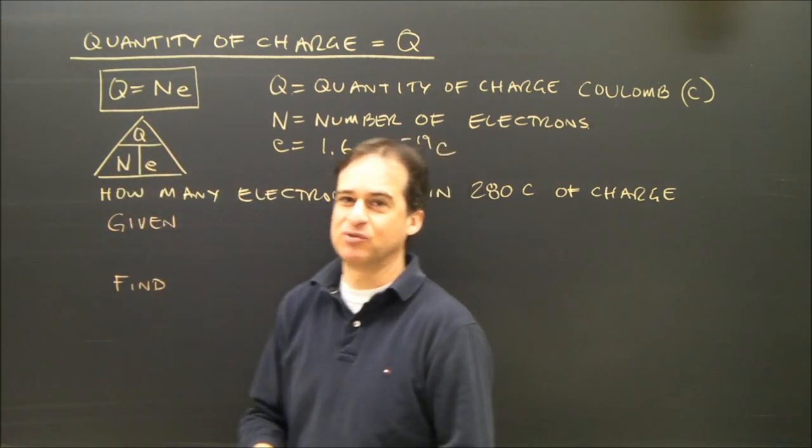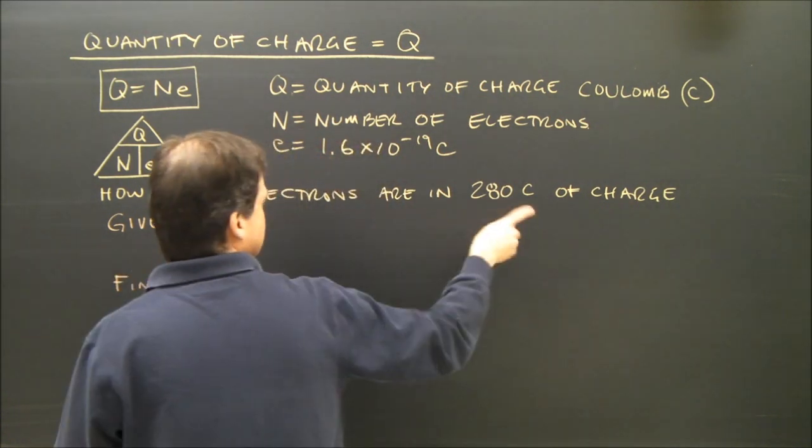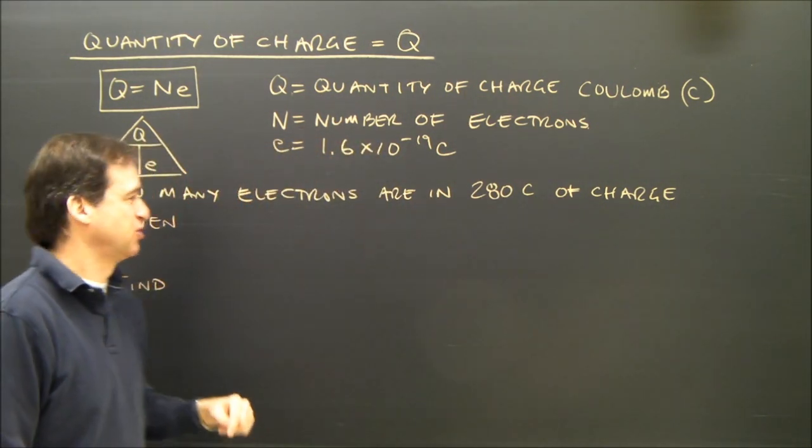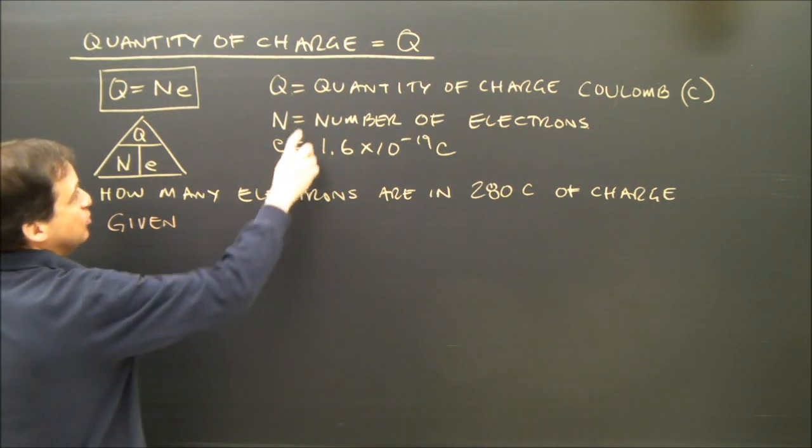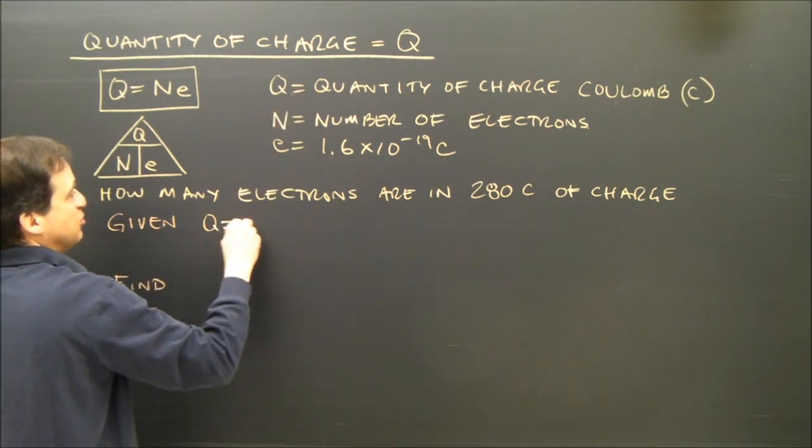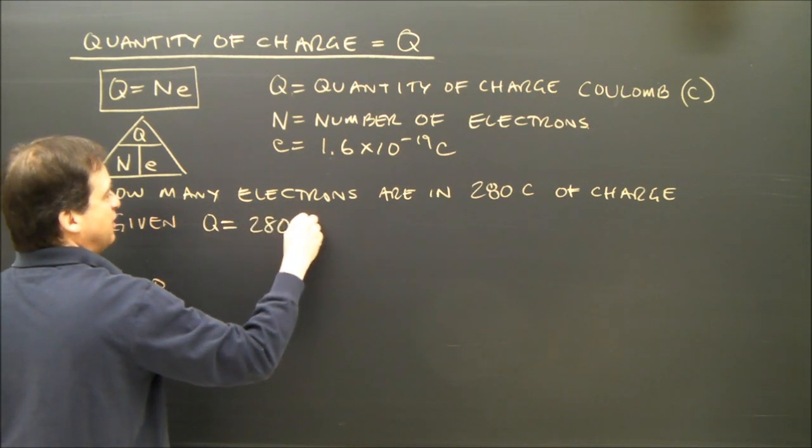So let's do a quick problem. It's quite simple. How many electrons are in 280 coulombs of charge? So our givens, we know there's 280 coulombs, so that's Q. Q equals 280 coulombs.